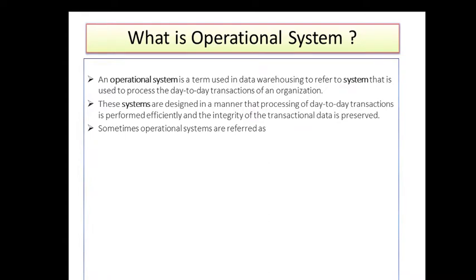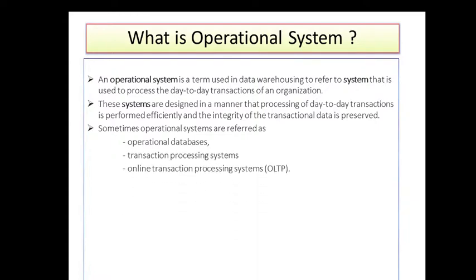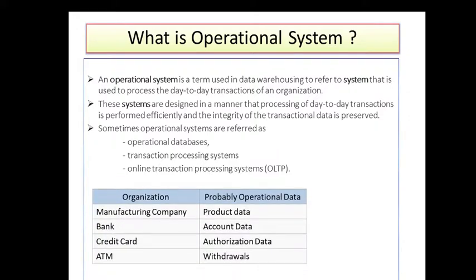There are other naming conventions used in the industry for the operational system: operational database, transactional processing system, and online transactional processing system, which is OLTP — you'll hear this term many times. For example, for a manufacturing company, the operational data is product information. For a bank, it's account information. For a credit card, it's authorization data — like ATM withdrawals.